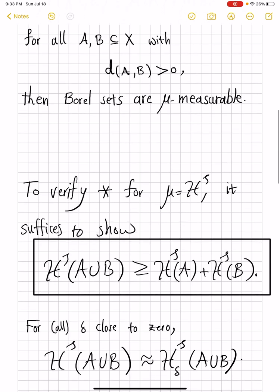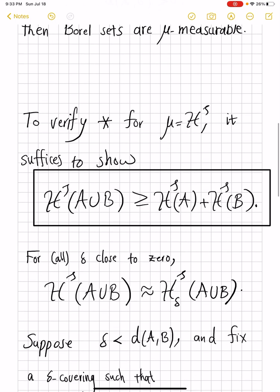So we focus on proving this inequality. If the left-hand side is infinity, we have nothing to do. So suppose it's finite. And by definition, H^s of A union B is limit of H^s_δ. So for δ pretty close to zero, we have a very good estimate of H^s in terms of H^s_δ.